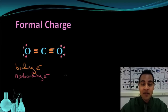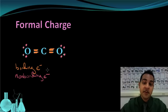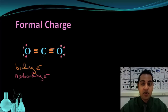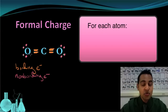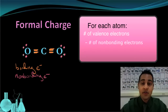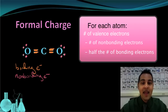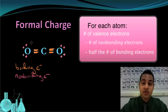Now that we've identified bonding and non-bonding electrons, formal charge is pretty easy to figure out. We do this for each atom. Formal charge equals the number of valence electrons the atom normally has, minus the number of non-bonding electrons, minus half the number of bonding electrons. Let's actually do this and see what it looks like.